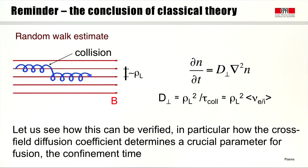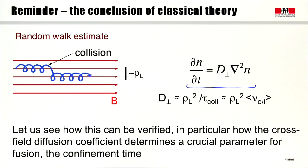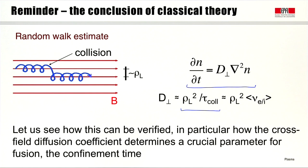I would like to start by reminding ourselves what we concluded from our analysis of classical theory. We used a very simple model — a random walk — considering that collisions between charged particles lead to jumps in the orbit of the order of the Larmor radius across the magnetic field. This leads to a diffusion equation for the density, with the main parameter being the perpendicular diffusion coefficient, which can be estimated as the square of the step size (the Larmor radius) divided by the collision time, or times the effective collision frequency for momentum exchange.